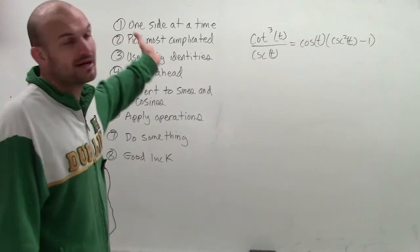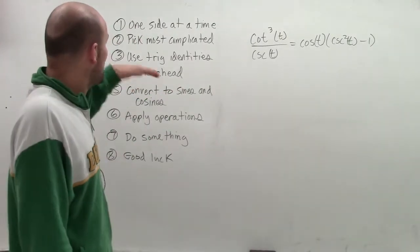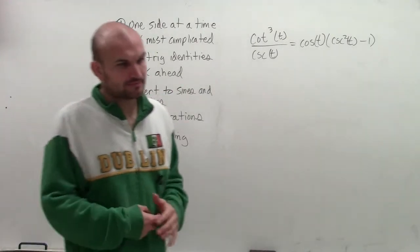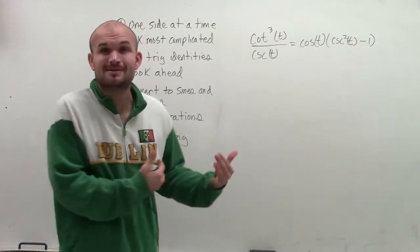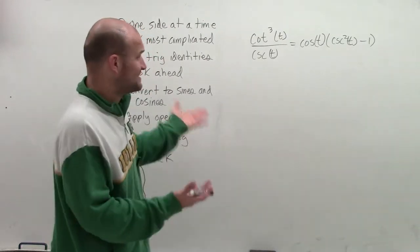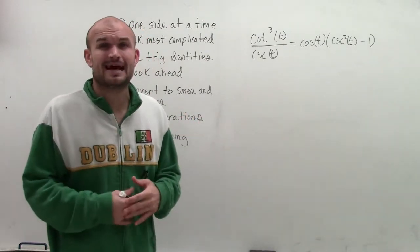So one thing we're going to do, make sure we're going to pick one side to simplify at a time. And we want to pick the most complicated. Now, it all depends on what you deem as the most complicated. We can make a point for each side that they're both complicated.